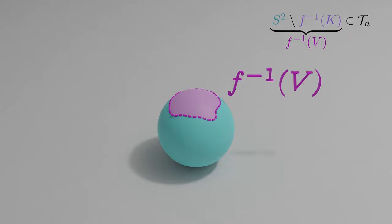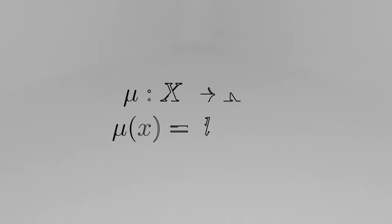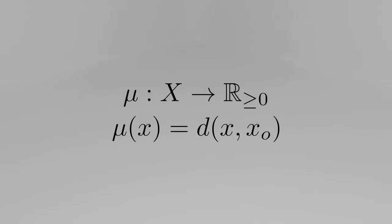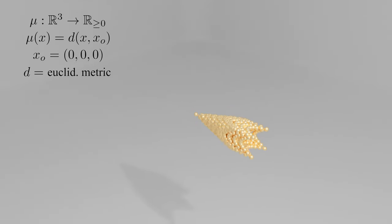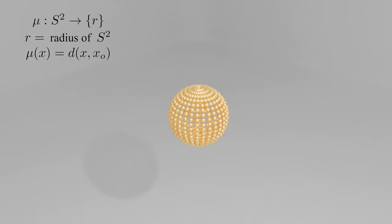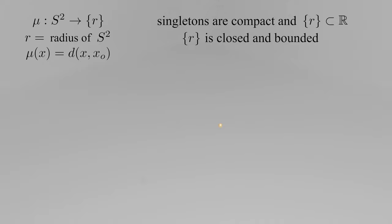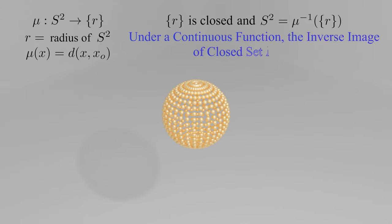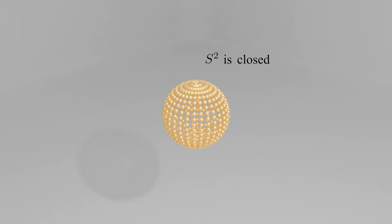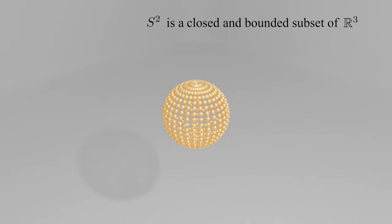Now before we prove F inverse is continuous, let me first go over why our sphere is compact. We'll begin with this function mu that maps metric spaces precisely to the non-negative real numbers. It turns out that mu is a continuous function. We can think of our metric space as R3, X0 as the origin, and D as the Euclidean metric. If we restrict the domain to the standard two-sphere, S2 gets mapped to singleton R, where R is the radius of the sphere. This singleton is a compact subset of the real line, and from Heine-Borel we know that the singleton R is a closed and bounded set. For this function, S2 is the preimage of a singleton, and it turns out that under a continuous function, the preimage of a closed set is closed. This means that S2 is closed. We also know that it's bounded because it's of finite size and completely contained in R3. Once again from Heine-Borel, we can finally say that S2 is compact.